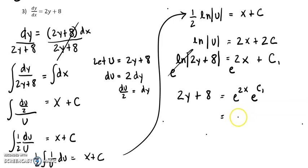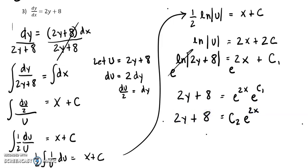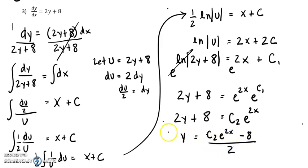e to the c1 is just a new constant — let's call it c2. So it's 2y plus 8 equals c2 times e to the 2x. Our last little step: solving for y gives us y equals c2 e to the 2x minus 8, all over 2.